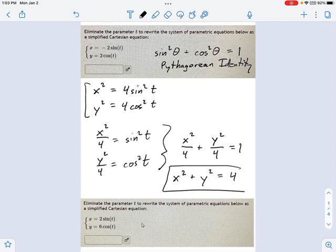This right here, I mean, either form of this would be fine. But this right here is the equation of a circle.